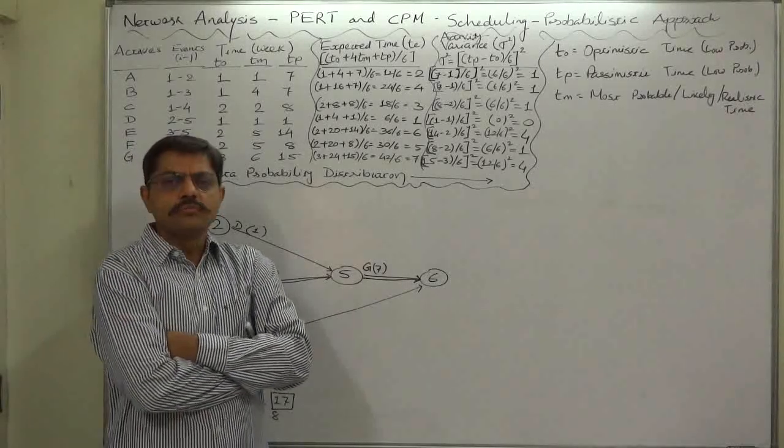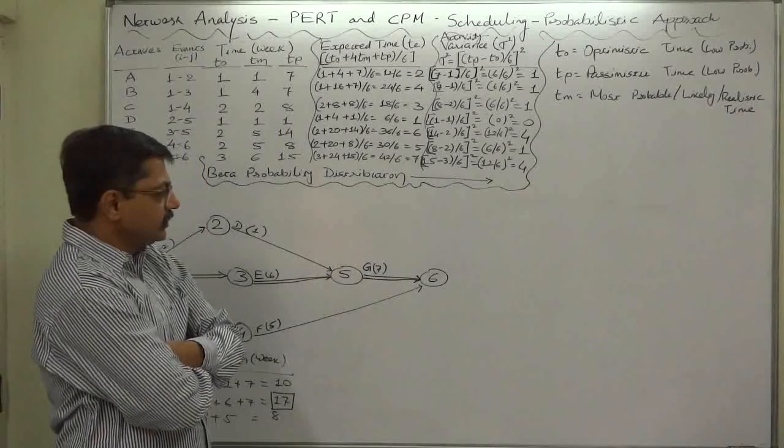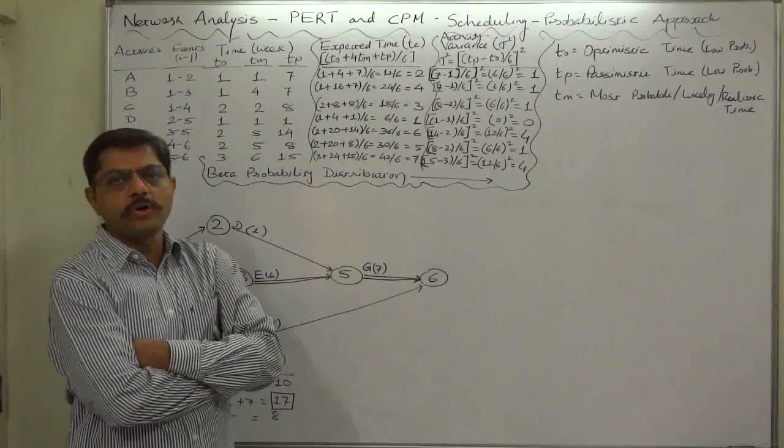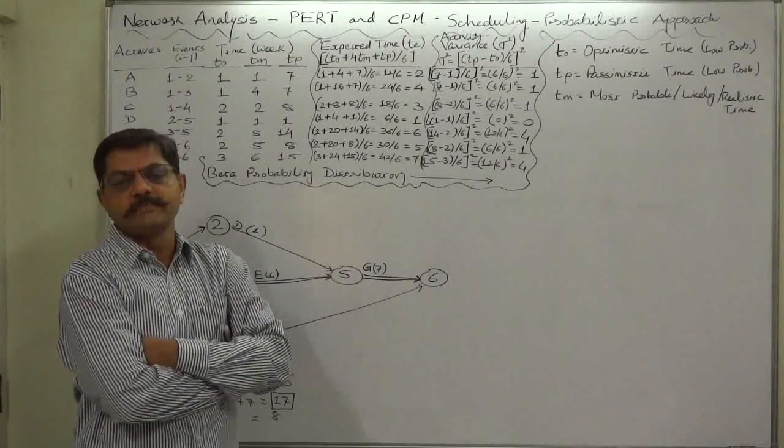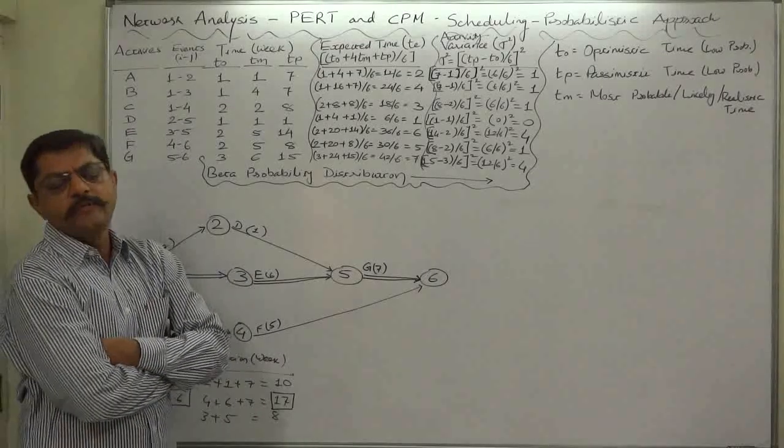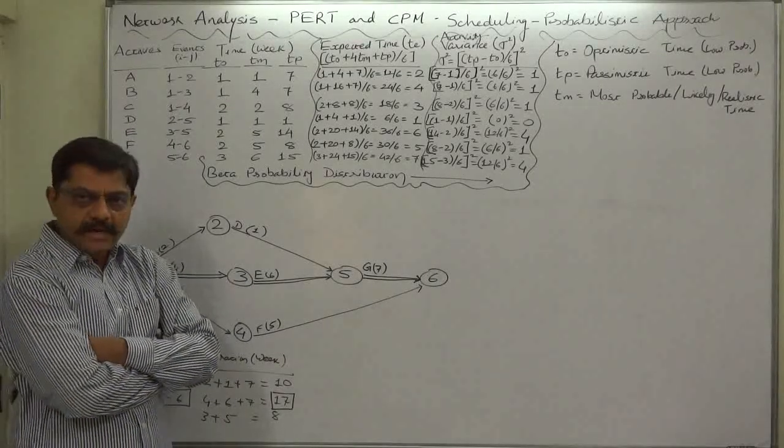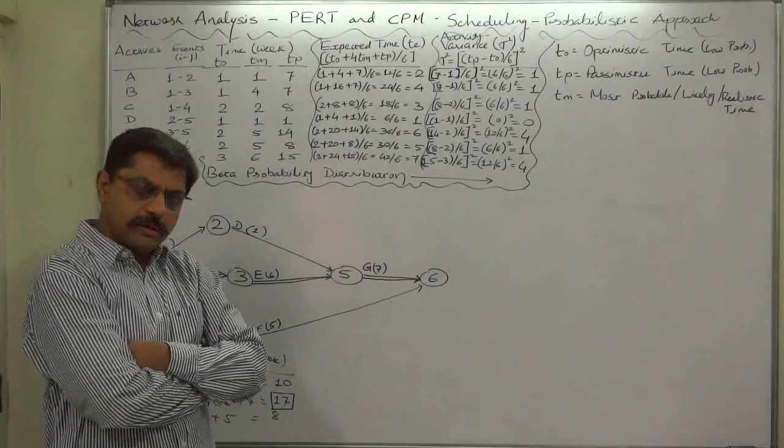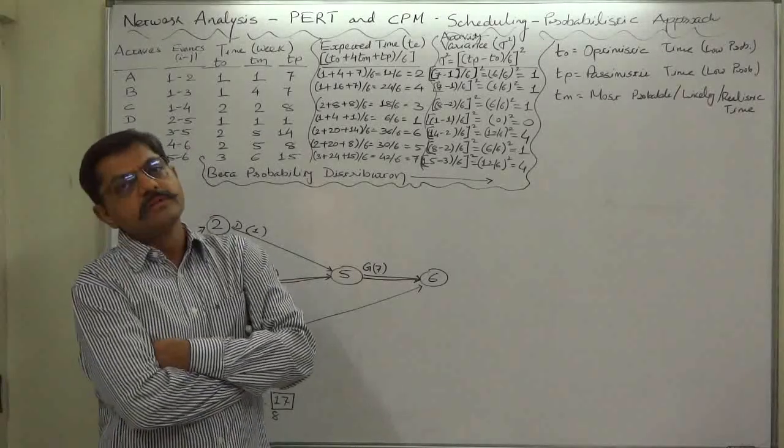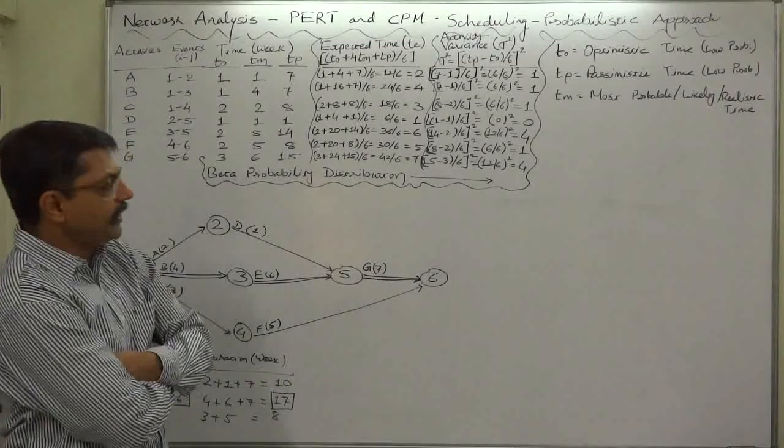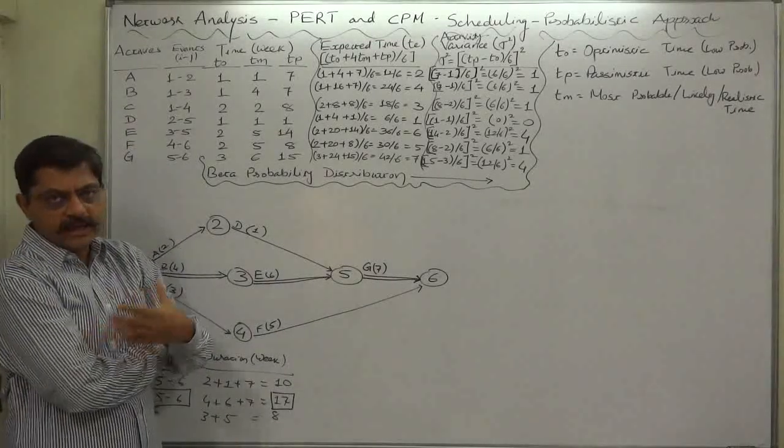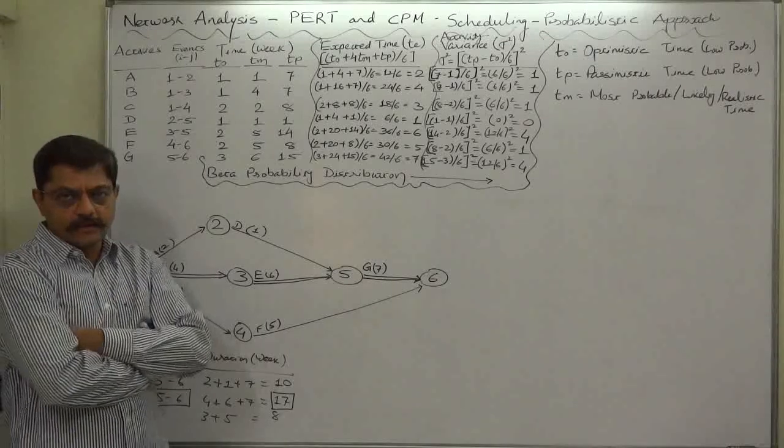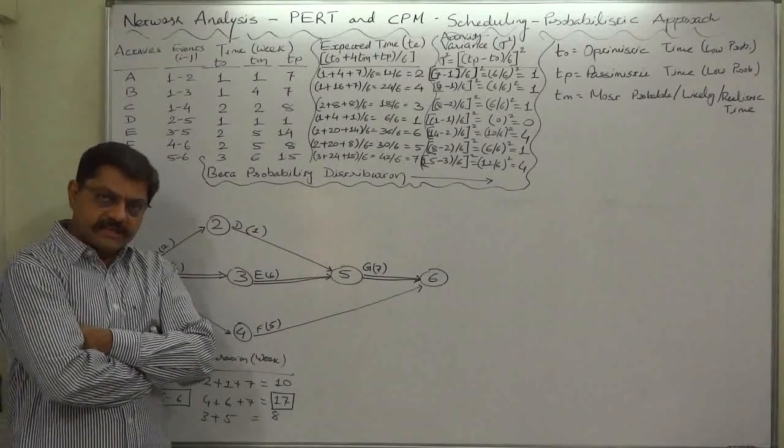On the basis of this assumption of normal distribution we can calculate various types of probabilities. But to make various calculations on the basis of assumption of normal distribution or bell-shaped distribution, first of all we need to know the mean as well as standard deviation of the distribution, and for that purpose we need the critical path. Hence we determine the critical path.